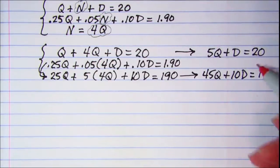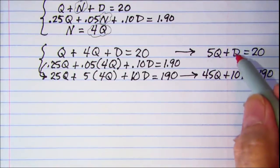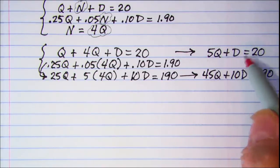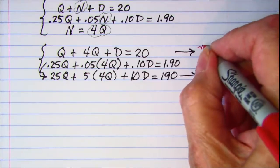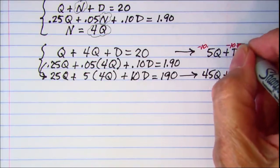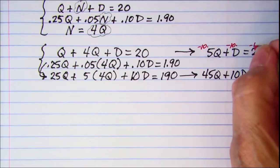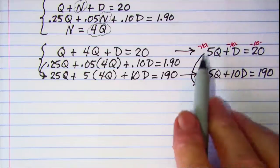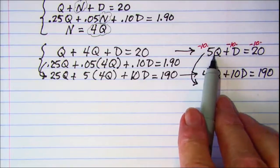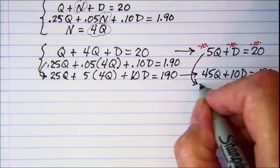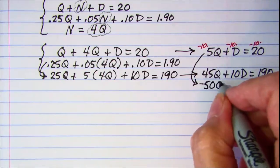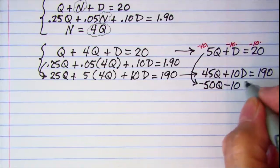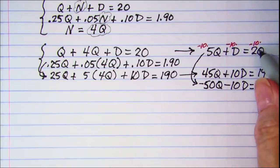So I think I'm going to use elimination here. I can change this top term to a negative 10D by multiplying every term by a negative 10. So then this equation, I can rewrite that here, negative 10 times 5 is negative 50Q, and then negative 10D, and then negative 200.